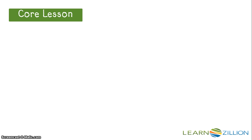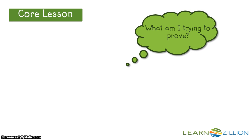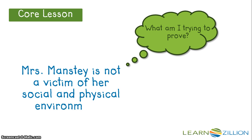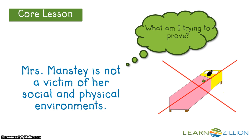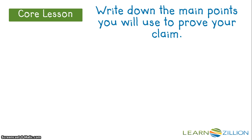The first thing we're going to do is ask ourselves, what am I trying to prove? Well, based on my working definition of a victim, I'm trying to prove that Mrs. Manstey is not a victim of her social and physical environments. Now that I have my claim, I am going to write down the main points I will use to prove my claim. This is where I need to make some logical sequencing decisions. Because this is an argumentative paper, I know I have to address the counterclaims and then disprove those claims. This is a really important part of my essay, so I'm going to write a paragraph about the counterclaims first.